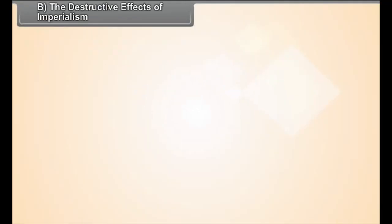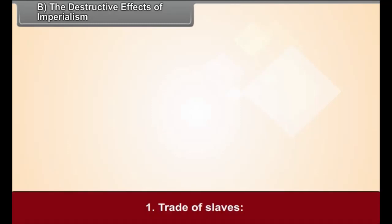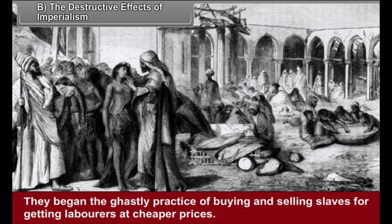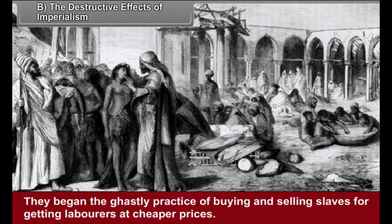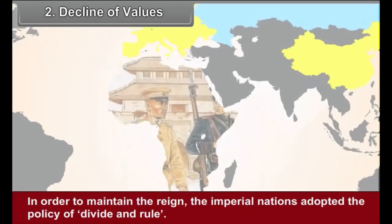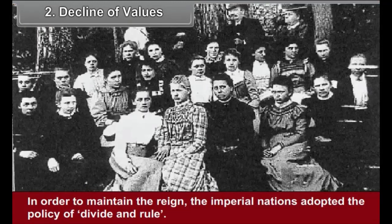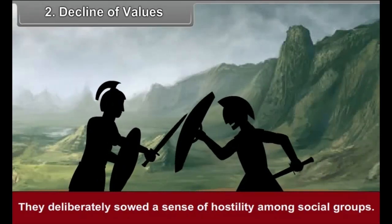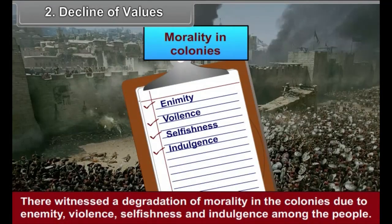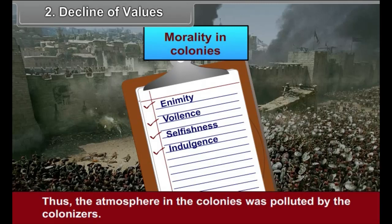The destructive effects of imperialism: first, the trade of slaves — the imperial nations ill-treated the people of the colonies and began the ghastly practice of buying and selling slaves for getting labourers at cheaper prices. Second, decline of values: in order to maintain their reign, the imperial nations adopted the policy of divide and rule. They deliberately fostered hostility among social groups. There was a degradation of morality in the colonies due to enmity, violence, selfishness and indulgence among the people. Thus, the atmosphere in the colonies was polluted by the colonizers.